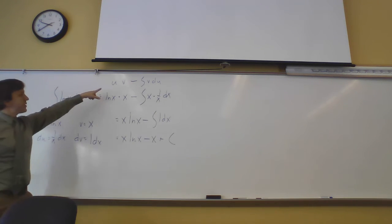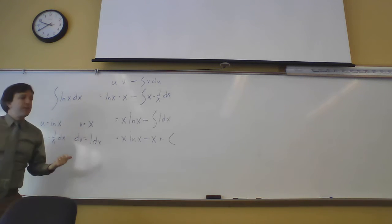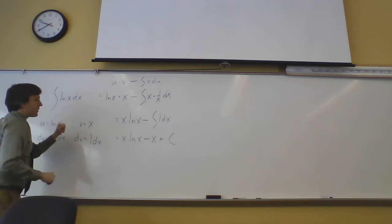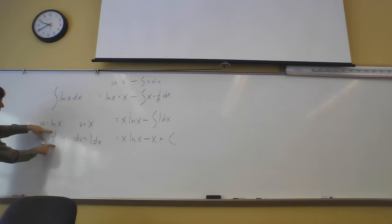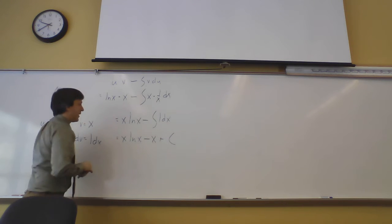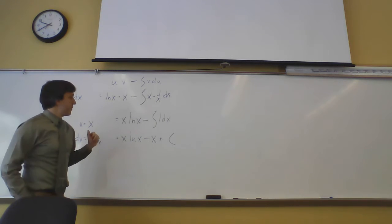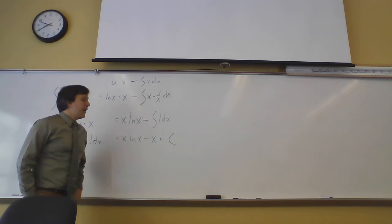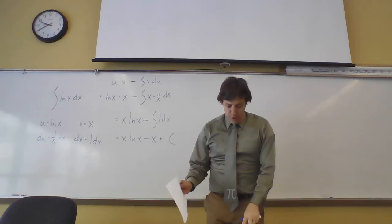Writing down the integration by parts formula again — u·v minus integral of v·du — we get: ln(x)·x minus the integral of x·(1/x) dx. The x's cancel nicely, leaving just the anti-derivative of 1. So the answer is x·ln(x) minus x plus C.